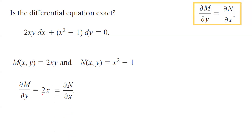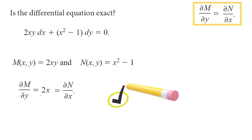The partial derivative of N with respect to x is also 2x. The left-hand side and right-hand side are equal to each other, so you can say for sure that you have an exact differential equation.